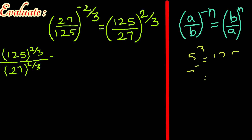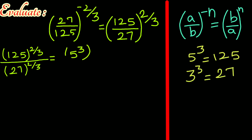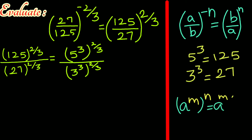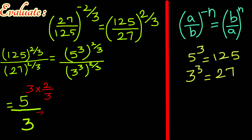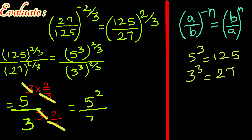125 is 5 cubed, the whole power 2 over 3. 27 is 3 cubed, the whole power 2 over 3. Power of power — multiply the powers. We have 5 to the power 3 times 2 over 3, divided by 3 to the power 3 times 2 over 3. Cancel the 3 over 3 in both numerator and denominator. We have 5 squared divided by 3 squared, which is 25 over 9.